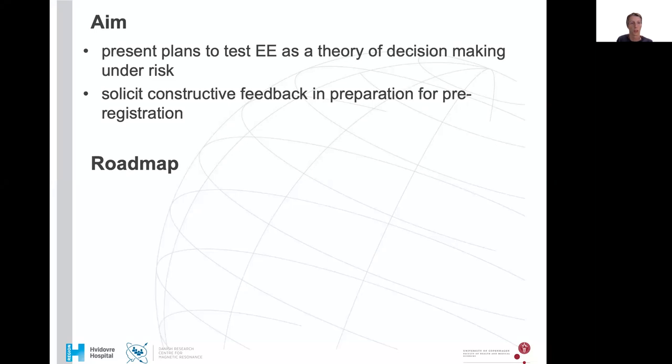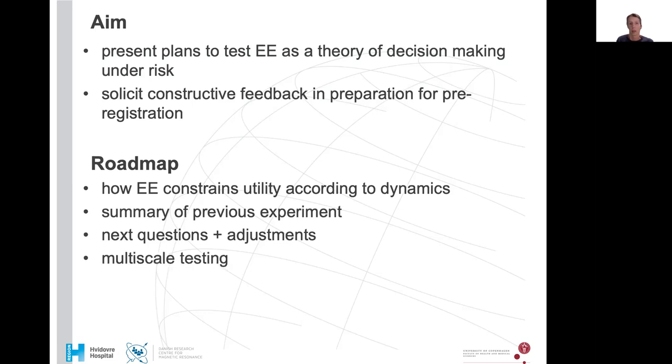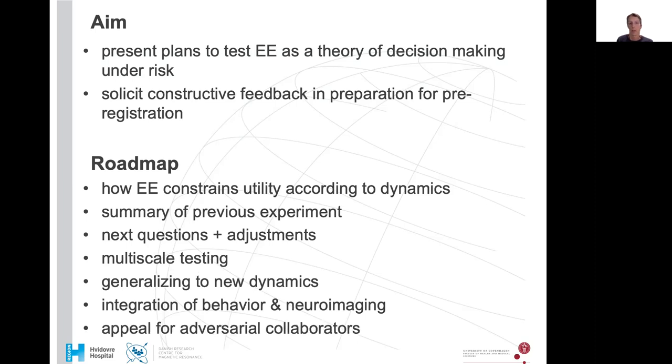The roadmap of the talk is that I first want to discuss how EE constrains utility according to dynamics that agents are facing. I want to summarize our previous experiment and the next questions that have arisen, the adjustments we would like to make. I want to tell you about testing at multiple scales, how we want to generalize to new dynamics, how we want to integrate behavior and neuroimaging data, and end with an appeal for adversarial collaboration.